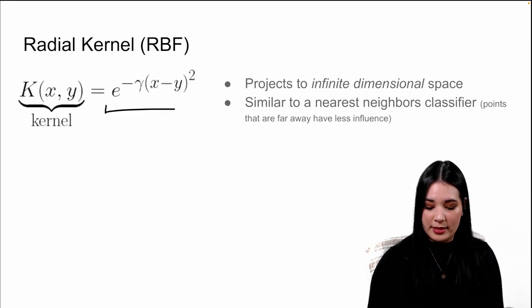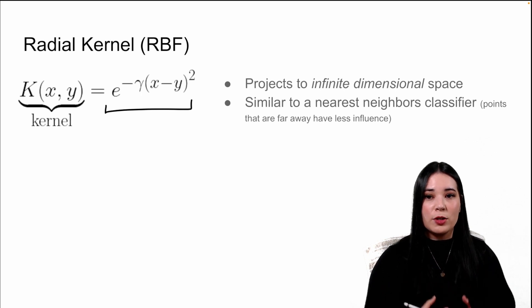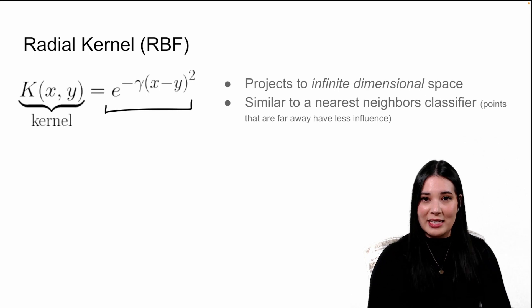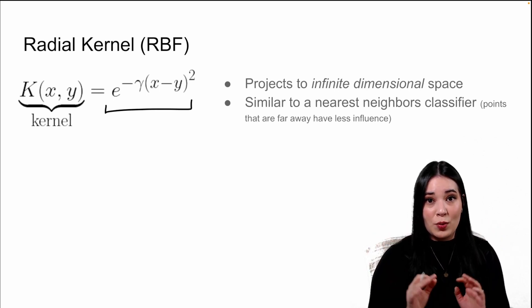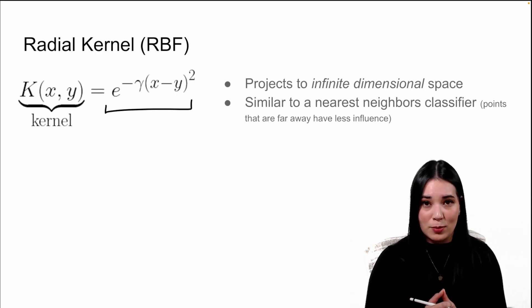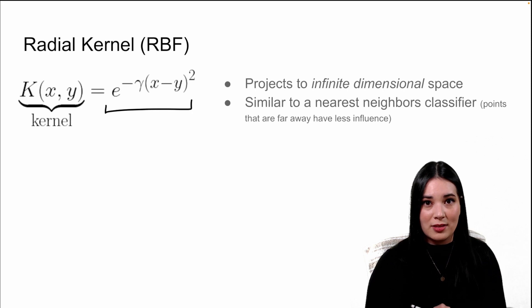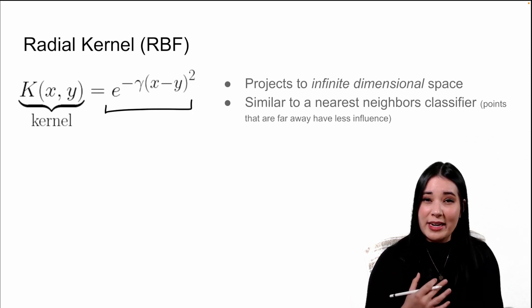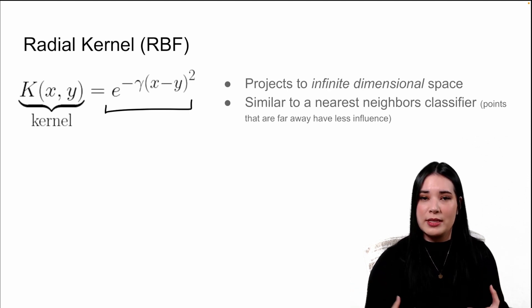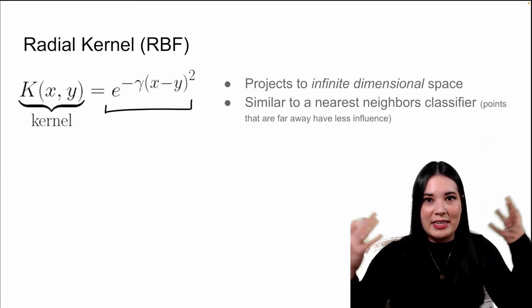The radial kernel, which is represented by this equation here, basically acts as if it projects data into an infinitely dimensional space. Before, with our polynomial kernel, we projected our data into two dimensions. The radial kernel projects it into infinite dimensions. So now you can see why it's really important that a kernel function calculates the relationship between variables without doing the actual projection, because it would literally be impossible for us to project data into infinite dimensions. It turns out that the radial kernel acts like a weighted nearest neighbor classifier, where points that are further away from a data point have less influence on what the class of that data point should be.